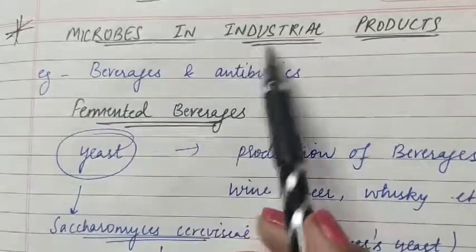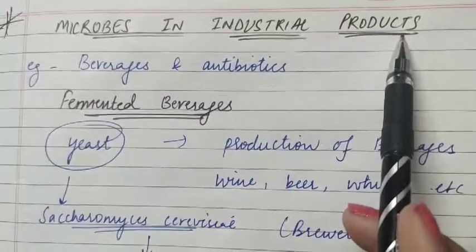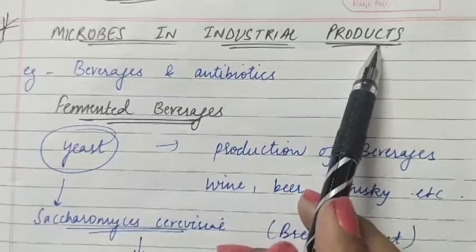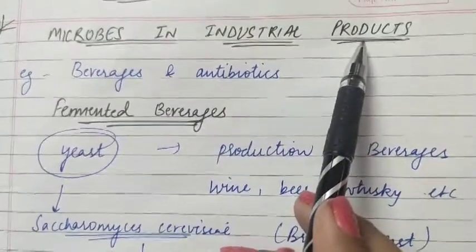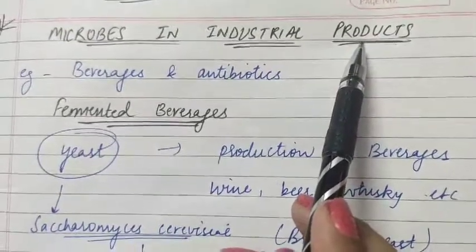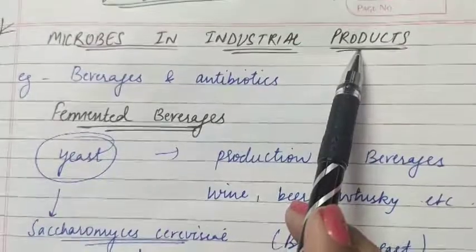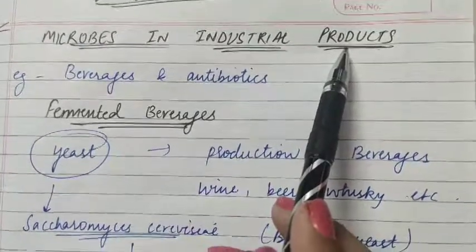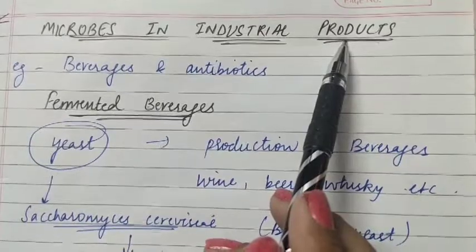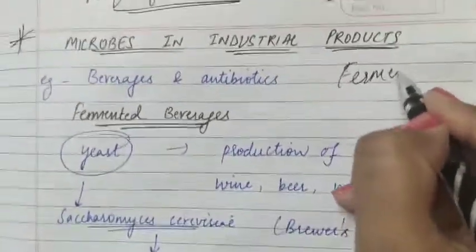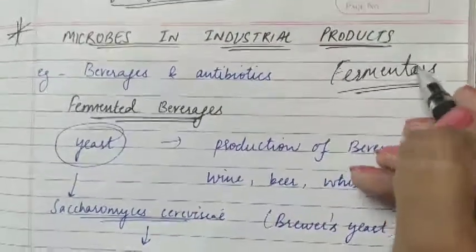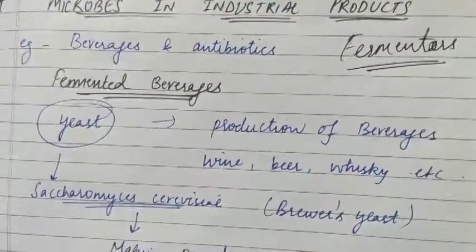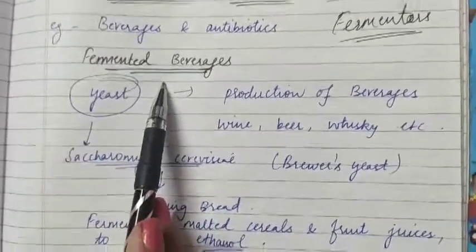Now we will discuss microbes in industrial products and how they are helpful. In industries, microbes are used to make many valuable products for human beings. Beverages and antibiotics are some examples. To produce these in large-scale industries, microbes have to be grown in large vessels called fermenters. Fermented beverages especially use yeast.